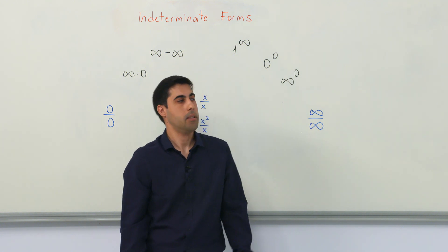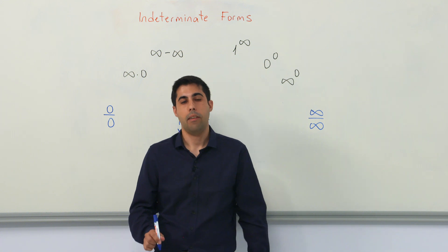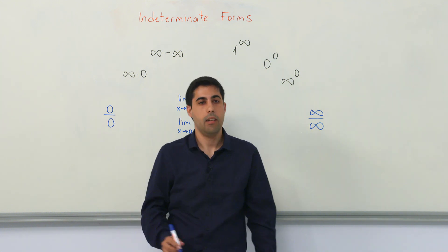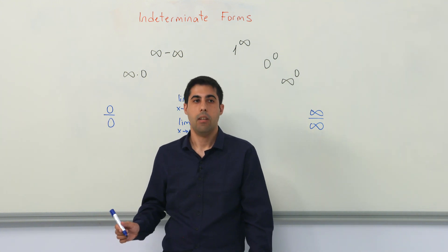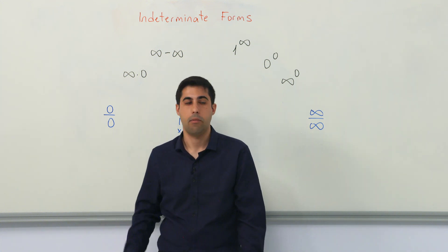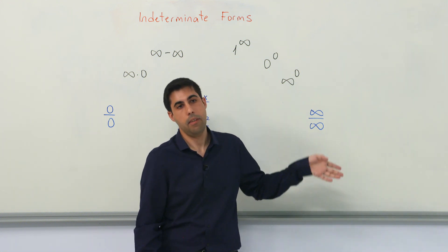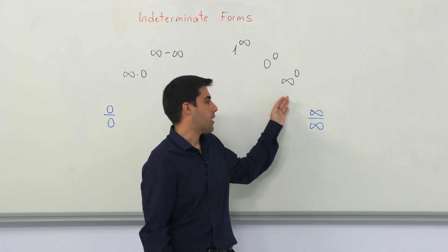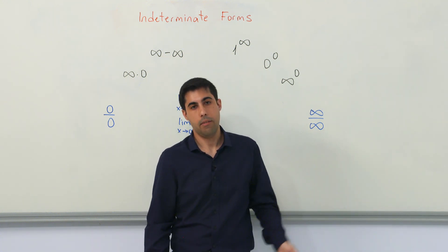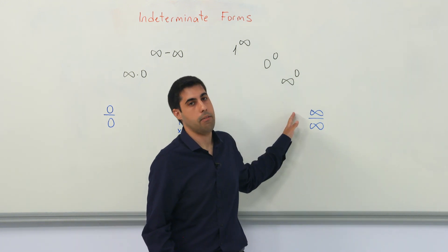Why are these forms indeterminate? We already know that in limit form, 0 over a constant gives us 0, or a constant divided by 0 gives us infinity. Infinity over a constant is infinity, whereas a constant divided by infinity gives us 0. However, there are other cases such as 0 over 0 or infinity over infinity.